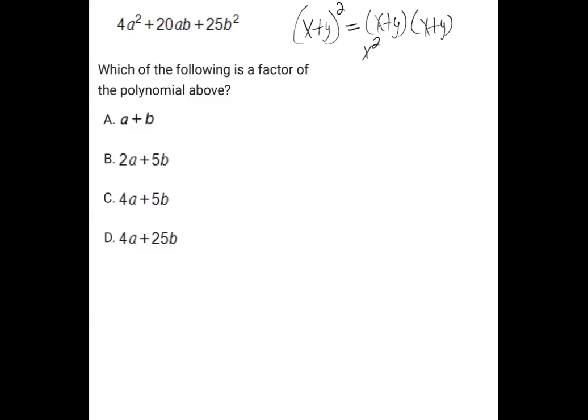first times first is x squared. Outer times outer is xy. Inner times inner is xy. And last times last is y squared. Combine the two middle parts and you get x squared plus 2xy plus y squared.